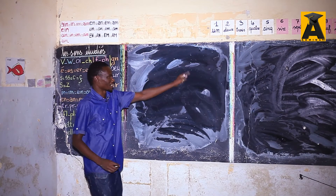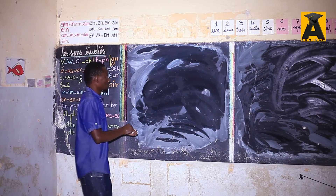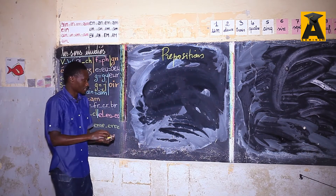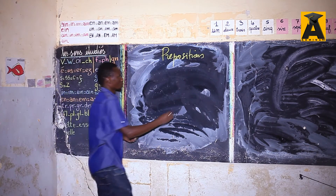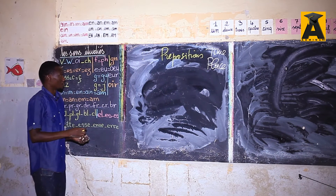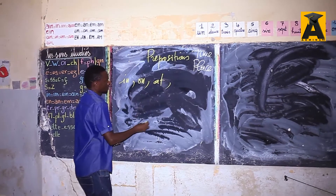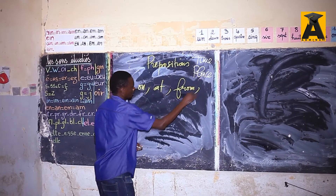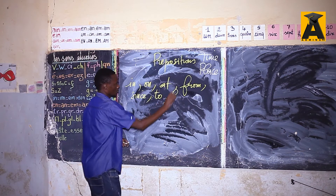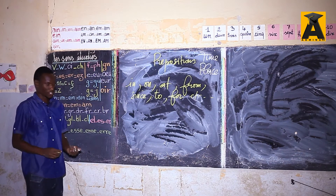Hello guys, I'm back again. I hope you enjoyed my first course. Today I'm going to present a lesson on prepositions — a very complicated topic in English. We'll focus on prepositions of time and place. The most common ones we use in English are: in, on, at, from, since, to, and for. We'll focus on these seven prepositions for today's lesson.